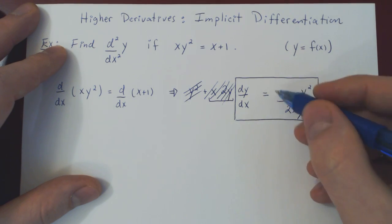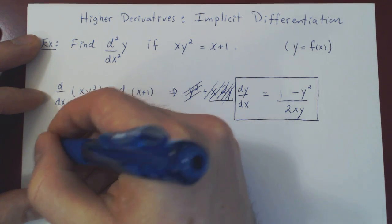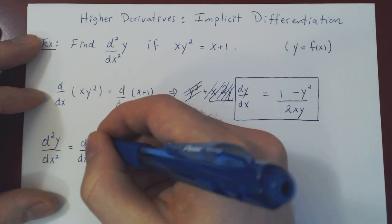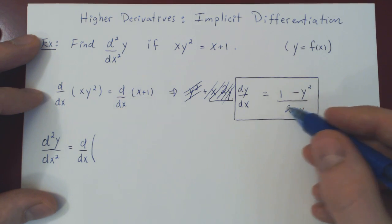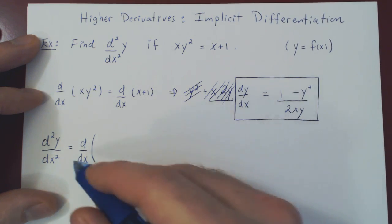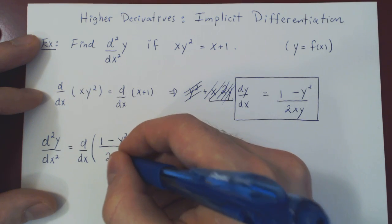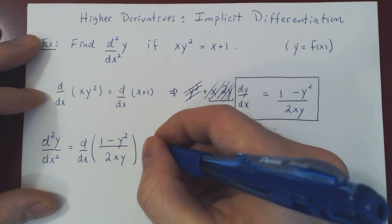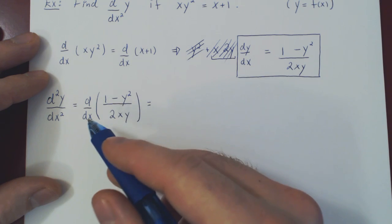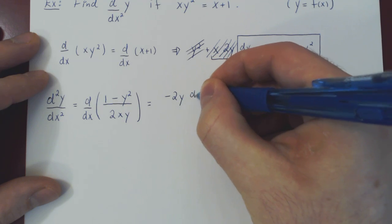To find the second derivative, we must differentiate the first derivative. Our first derivative as a function of x and y is (1 minus y²) over 2xy. By taking the derivative of this expression we will find our second derivative. As we have a quotient, we must use the quotient rule. So the derivative of our numerator with respect to x, applying the chain rule carefully, gives us negative 2y times dy/dx.